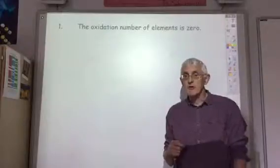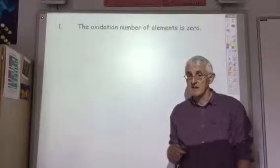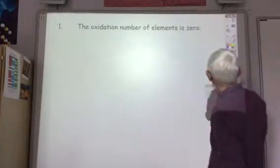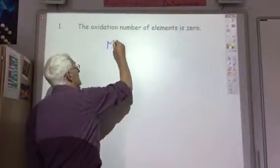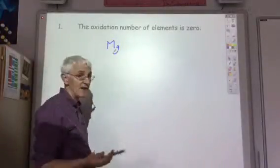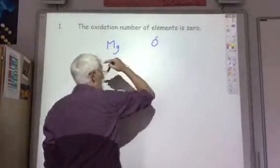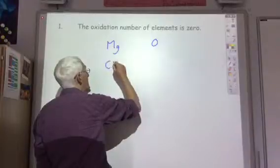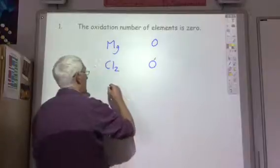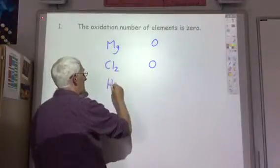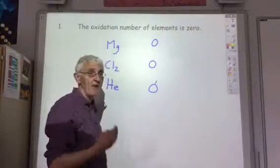The first rule is that the oxidation state of an element is zero. For example, if you have magnesium metal, the oxidation state of magnesium is zero. If you have chlorine, the oxidation state of the chlorine is zero. If you've got helium, the oxidation state is going to be zero. So the oxidation state of an element is zero.